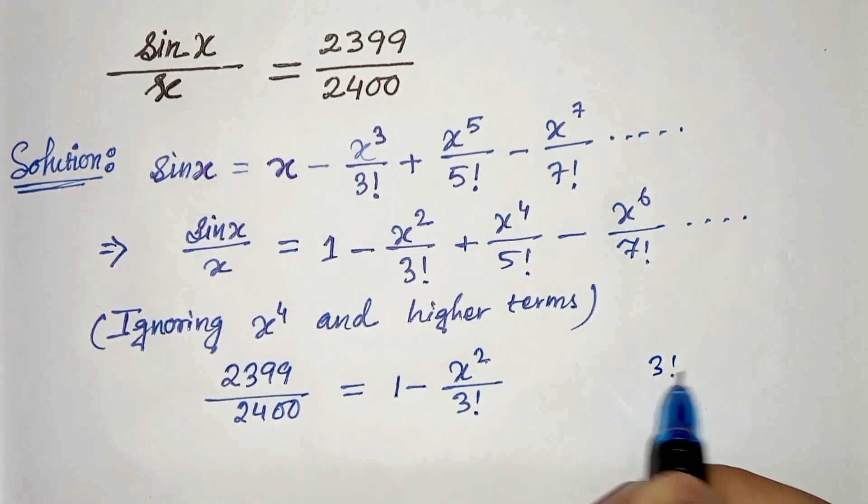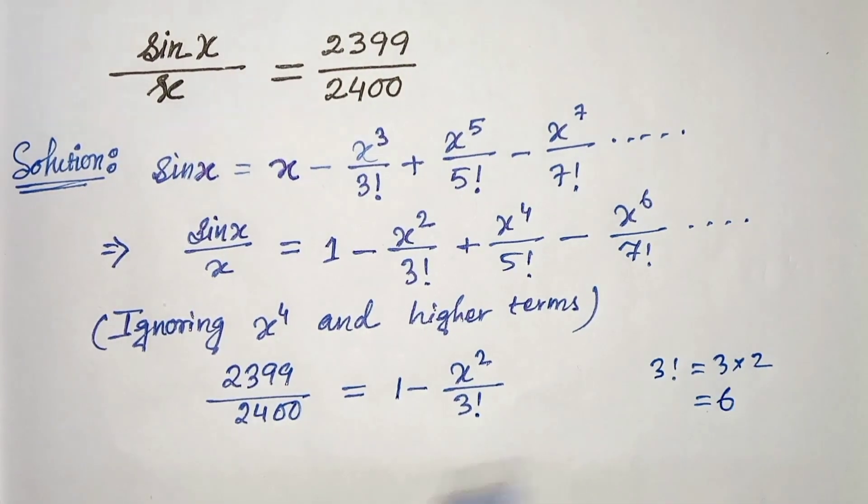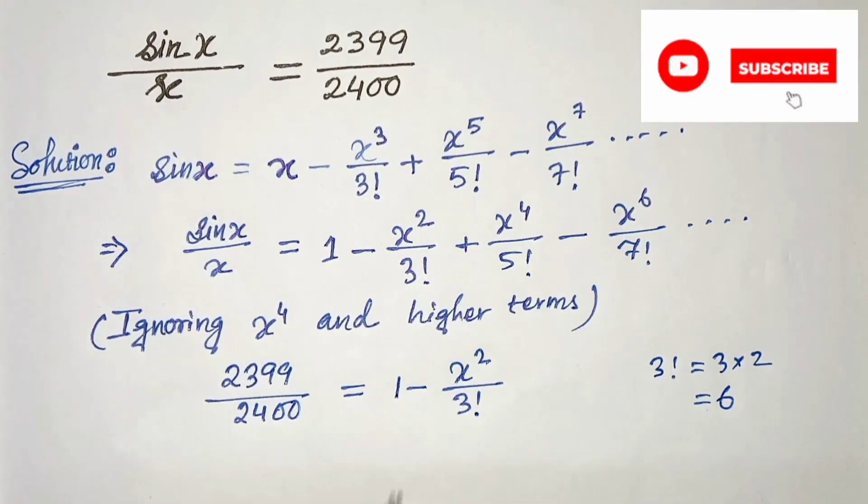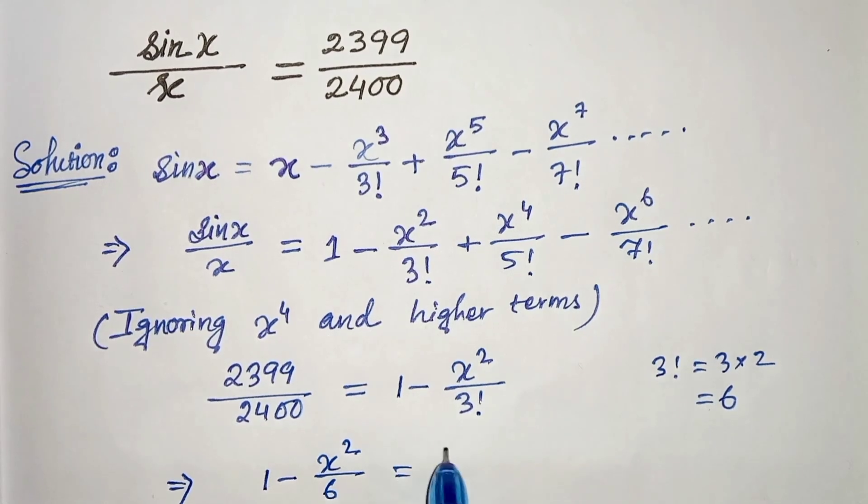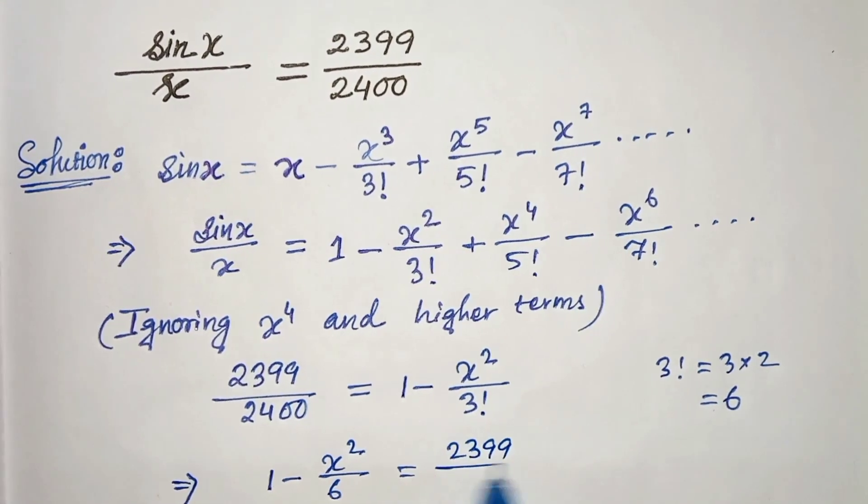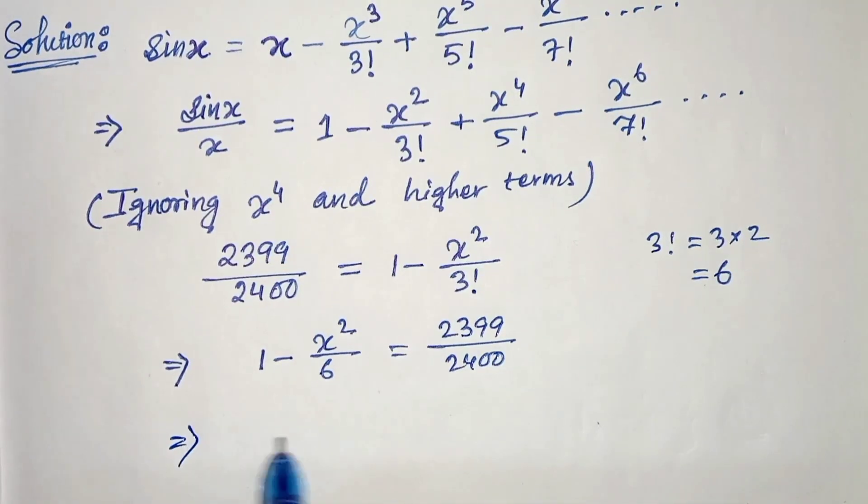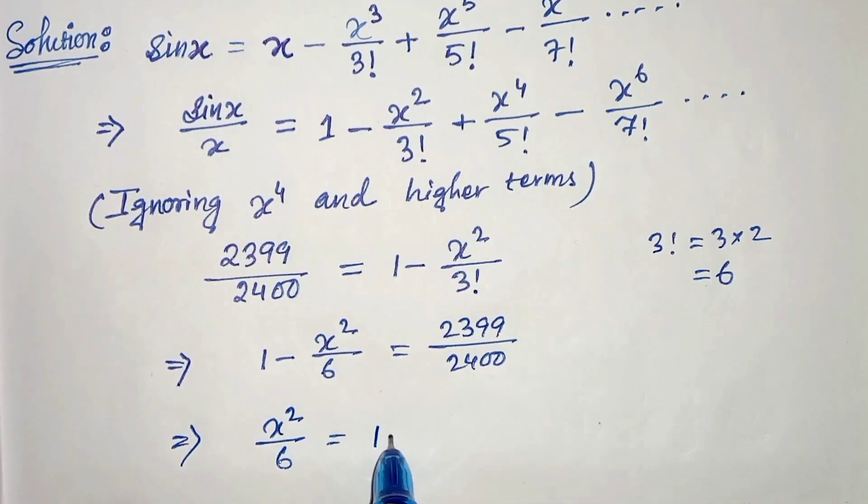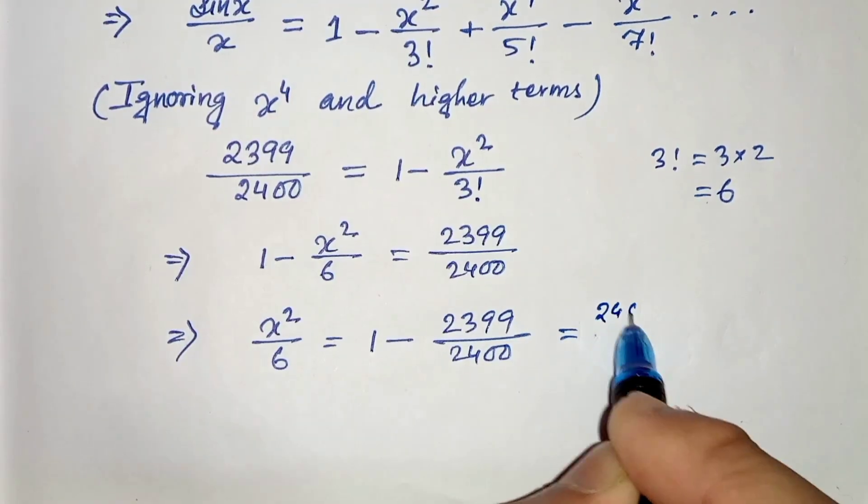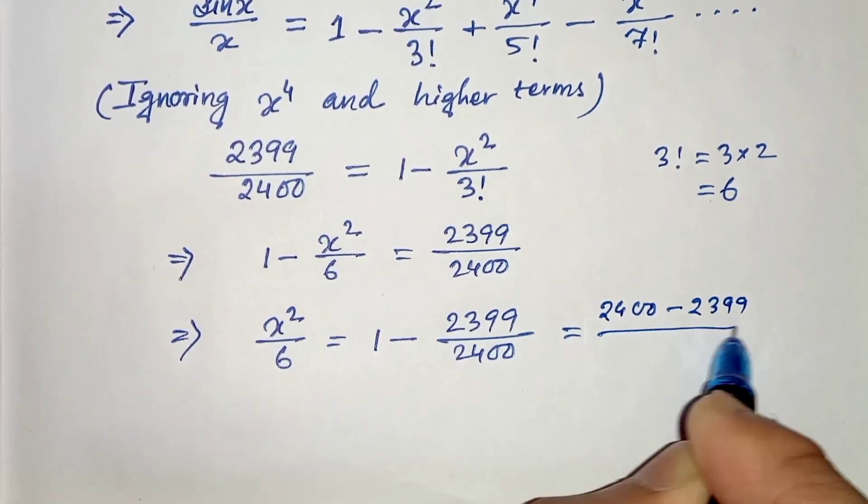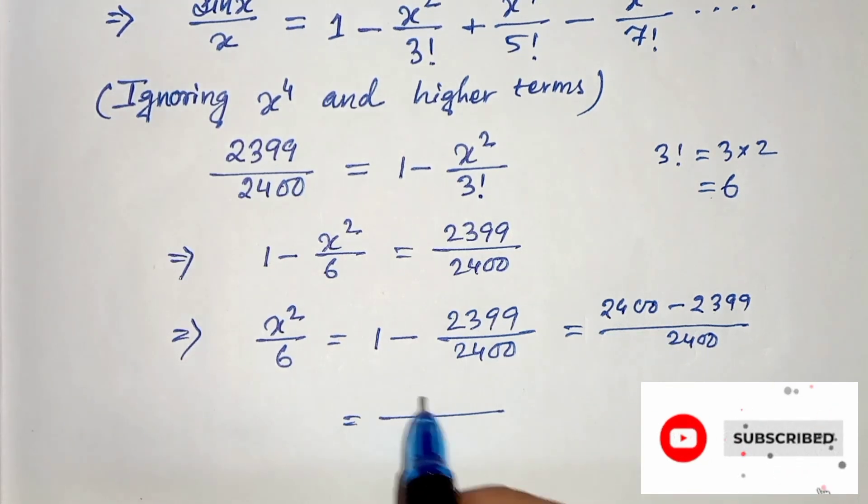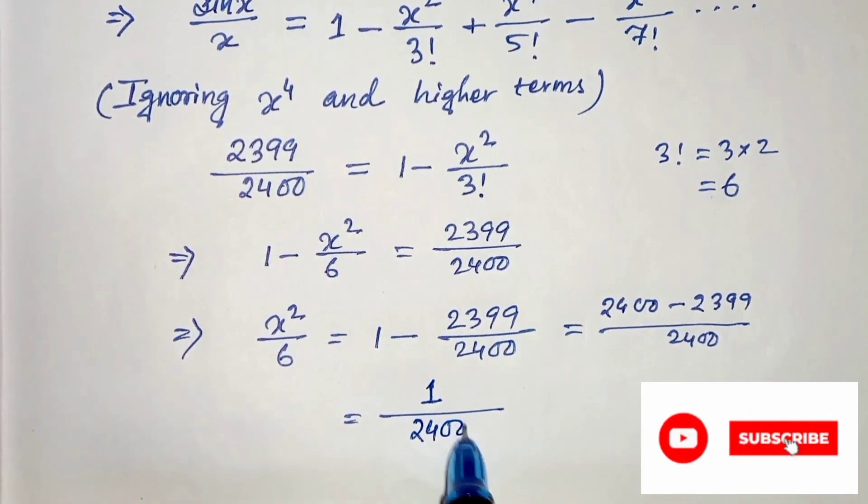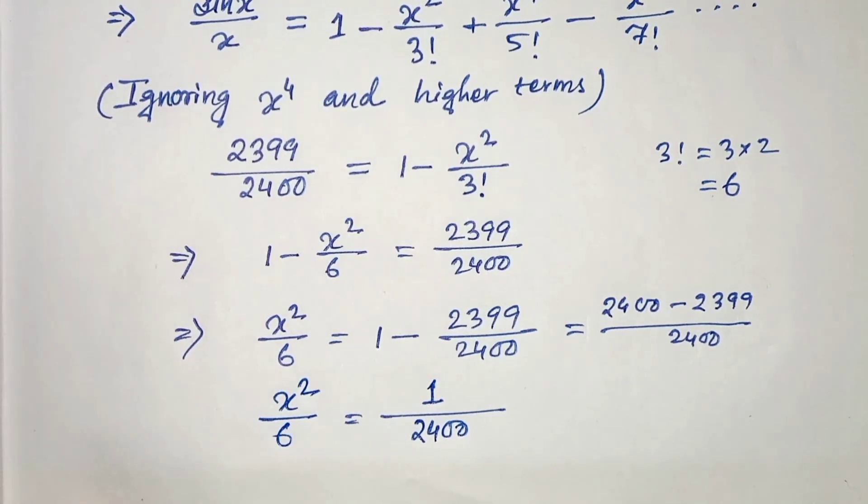Now 3 factorial can be written as 3 into 2 which is 6. So 1 minus x squared over 6 equals 2399 divided by 2400. So x squared over 6 can be written as 1 minus 2399 divided by 2400, which is 2400 minus 2399 divided by 2400. And from there we get 2400 minus 2399 is 1 over 2400. And on the left hand side we have x squared divided by 6.